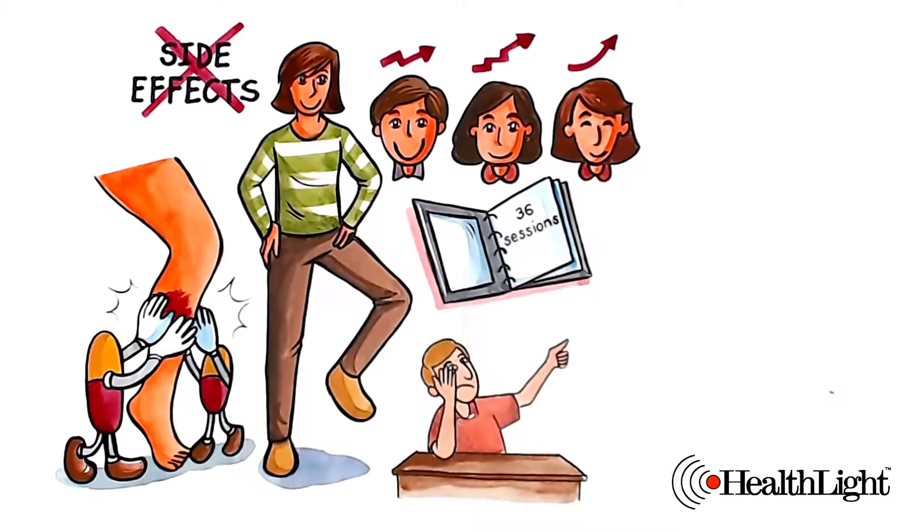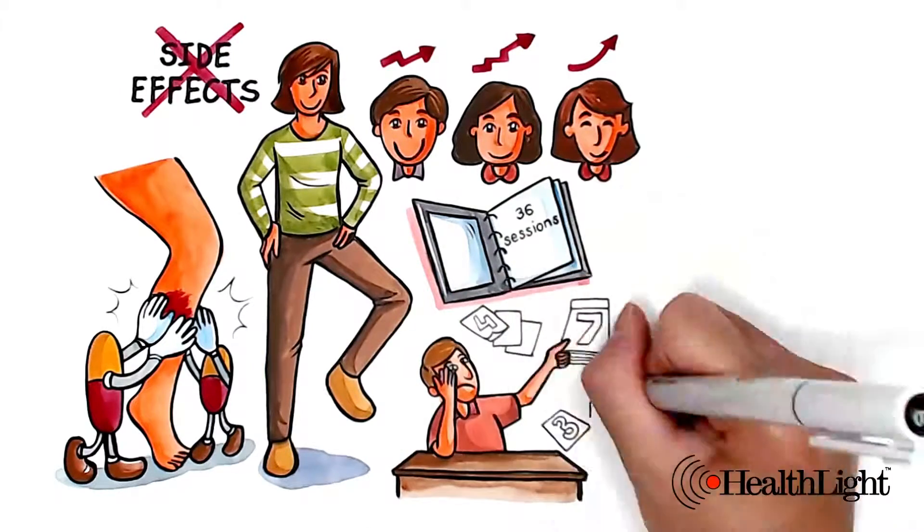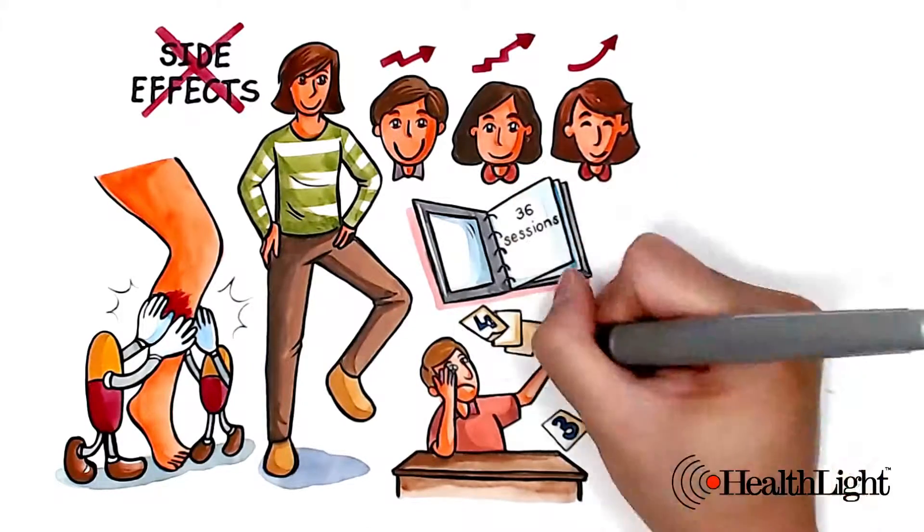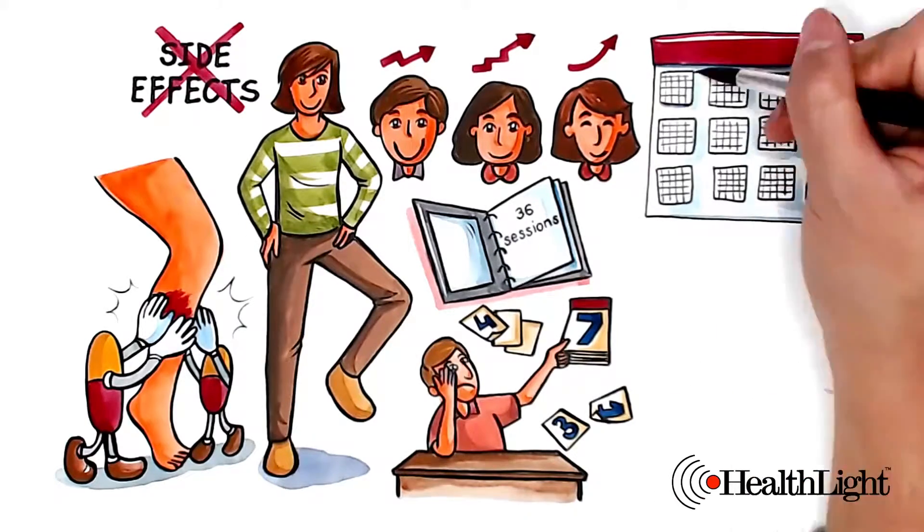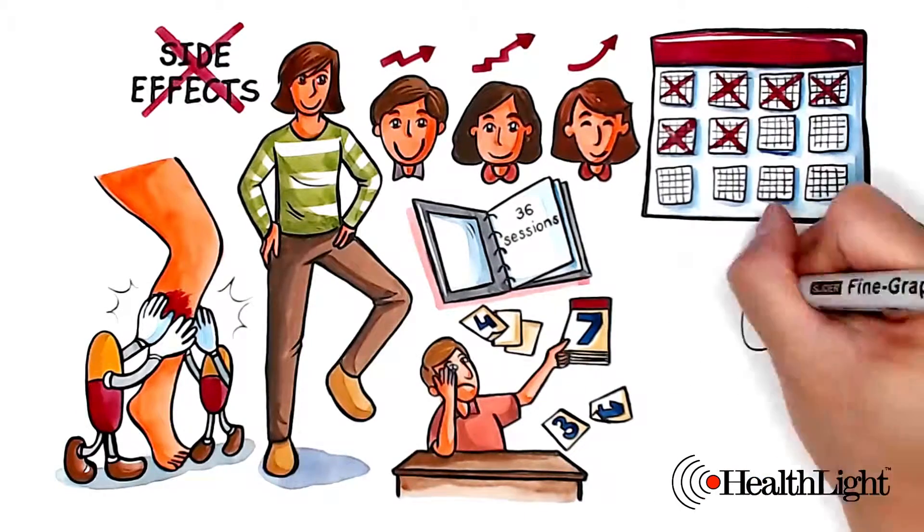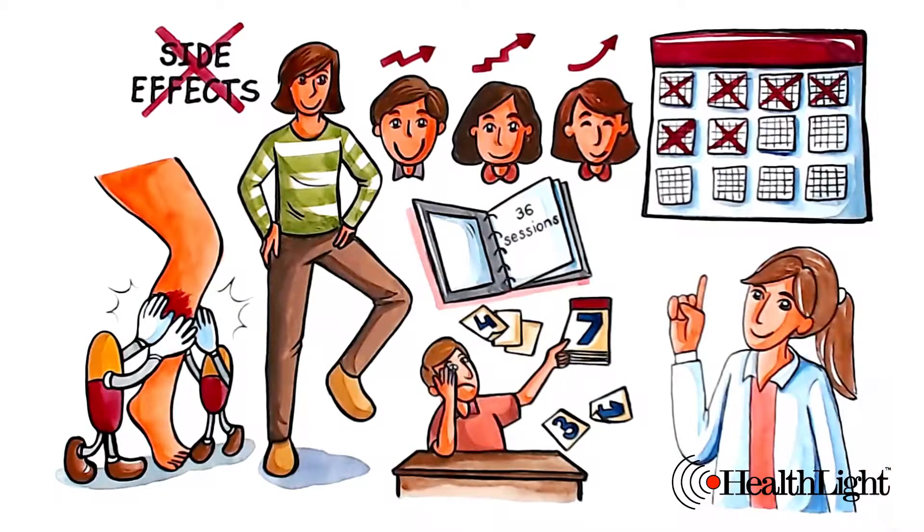Your condition developed over a long period of time, and now it will take some time to reverse its effects. Your symptoms should continue to improve for approximately 6 months, because remember, nerves regenerate slowly.